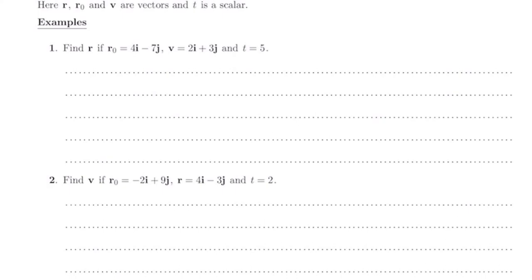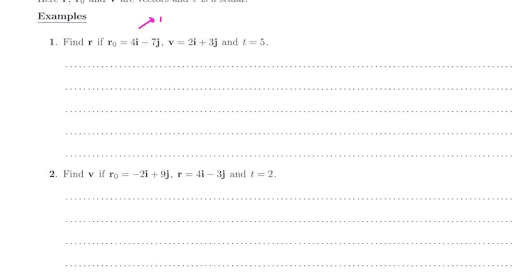This first one says find r if r₀ equals 4i minus 7j, v is 2i plus 3j and t is 5. Now you can write things in column vectors, so sometimes it does make it easier, and v is the column vector 2, 3 and of course time is 5. It is up to you how you go about it. Let's have a look at this first one. I'm going to work in column vectors.